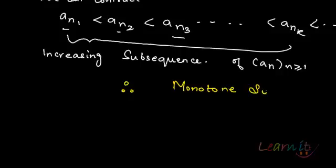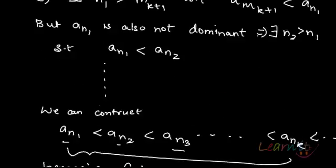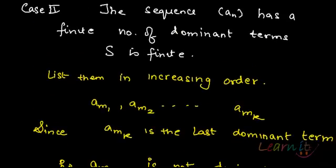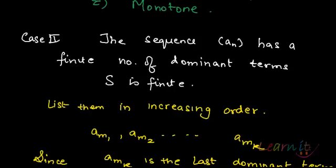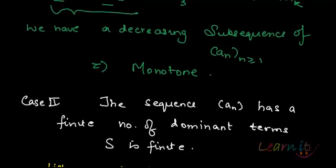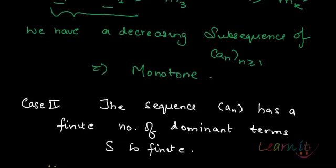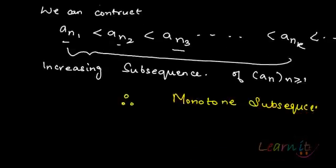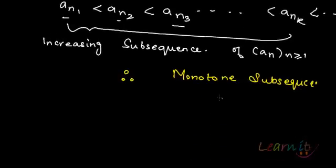So a_n has a monotone subsequence. Whether the set S is infinite or finite, in both cases our sequence has a monotone subsequence readily available within it.